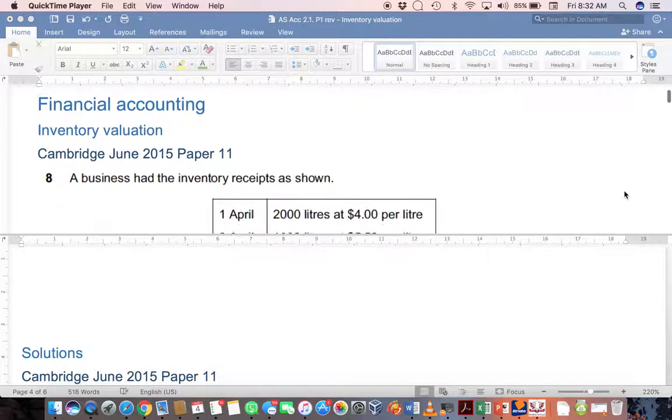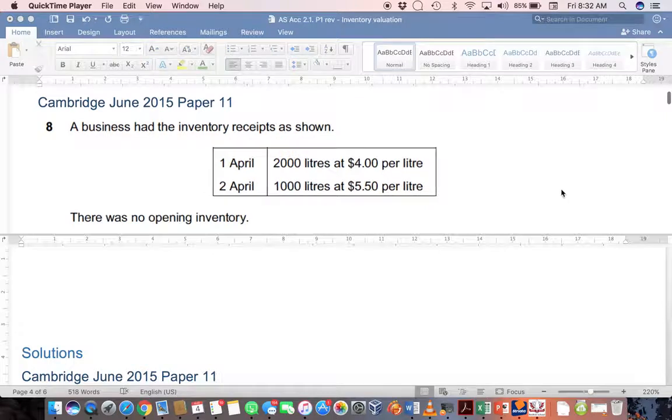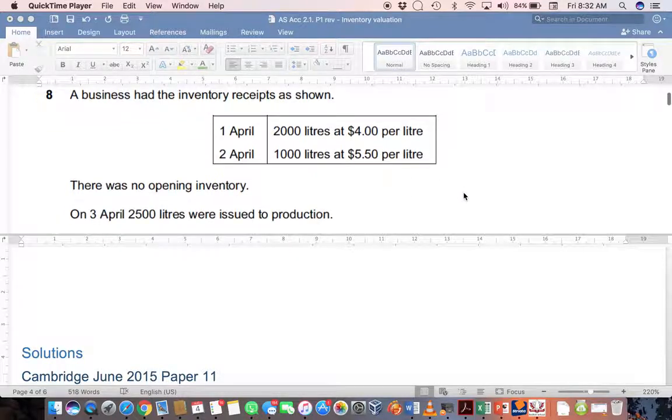The first one we'll look at is Cambridge June 2015 paper 11 question 8. A business had inventory receipts as shown. On the 1st of April there were 2,000 litres at $4 per litre, and on the 2nd of April they received a thousand litres at $5.50 per litre. There was no opening inventory.